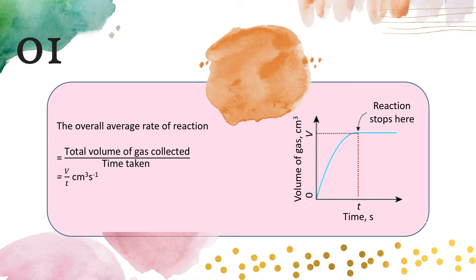The first method is the overall average rate of reaction. This means when the reaction stops, you take the total volume of the gas and divide it by the time taken when the reaction stops. This is the overall average rate of reaction.